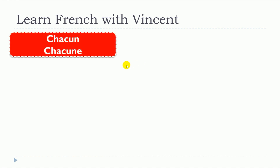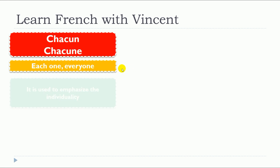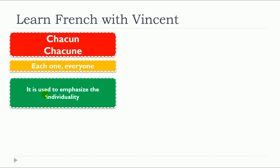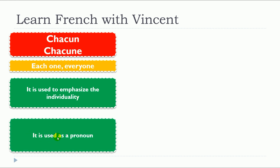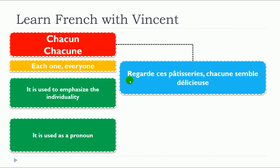This lesson is about chacun and chacune, and they mean each one, everyone. Chacun and chacune are used to emphasize the individuality, and they are used as a pronoun. Let's see some examples.